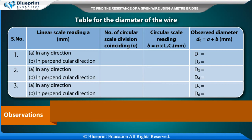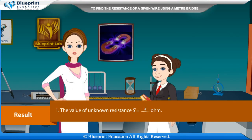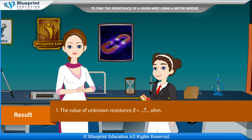Table for the diameter of the wire includes: serial number, linear scale reading A (mm), number of circular scale divisions coinciding n, circular scale reading B = n × LC (mm), and observed diameter D₀ = A + B (mm), measured in two mutually perpendicular directions at each place. Readings D1 through D6 are recorded. Mean observed diameter D = x mm.